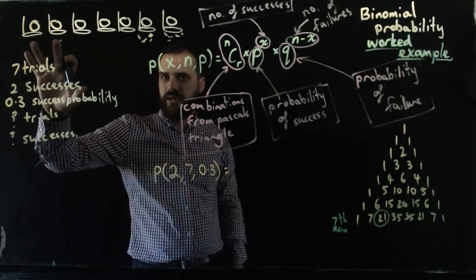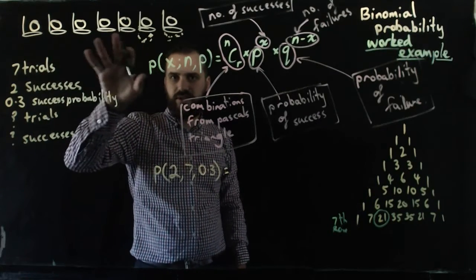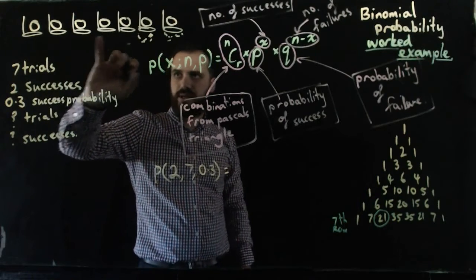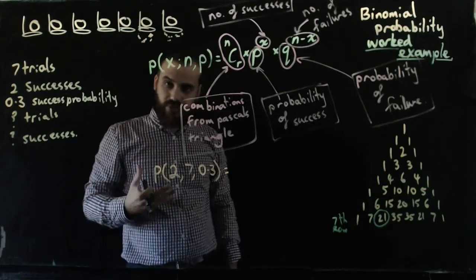You might get two here, the first two right, and the fifth, the other five you miss. You might get this one right, miss this one and get this one, and miss all those. There's 21 different ways that you can do it.